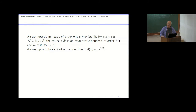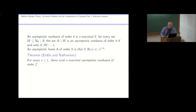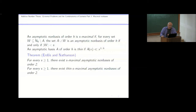It's kind of like dark matter — you don't know whether these things exist or what they look like. A basis of order h has to grow at least like x to the one over h — we say an asymptotic basis is thin if its counting function is bounded above by some constant times x to the one over h. There is a theorem that says for every s, there exist s-maximal asymptotic non-bases of order 2. These things can all be constructed. And also for every s, there is a thin s-maximal asymptotic non-basis of order 2.